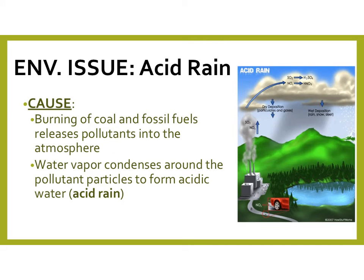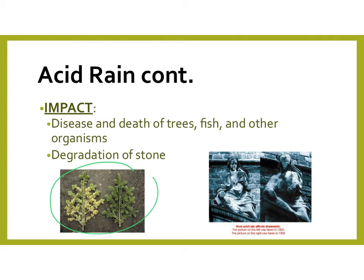Our next environmental issue is acid rain. This occurs when we have combustion — a factory or a car releasing gases into the atmosphere. Those gases then mix with clouds and water vapor, and when that rain falls down, it's going to be slightly acidic. Where that rain falls, it could damage the organisms there and possibly kill them. You can see a plant being exposed to acid rain starting to die off. Also, stones in our buildings can be affected — acid rain can actually break down the stones, like you see in that statue.